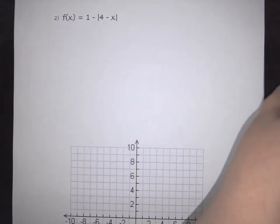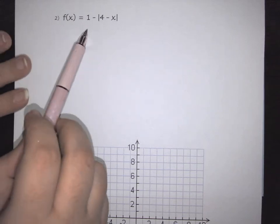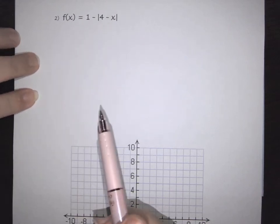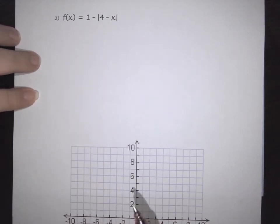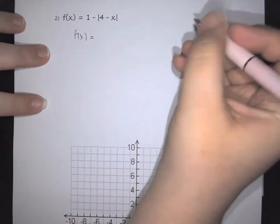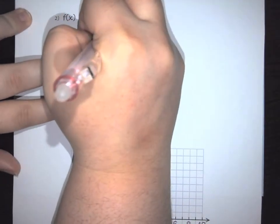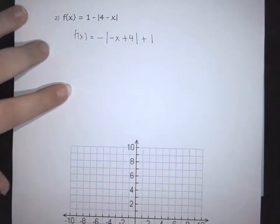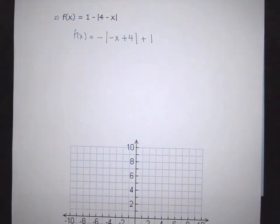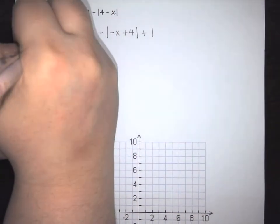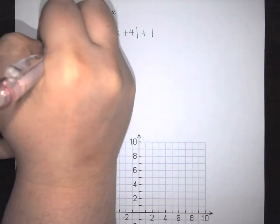Now let's look at another example. We've got the function one minus the absolute value of four minus x. The first thing I would do is rearrange the equation so I can see the translations more clearly. By rearranging your terms, you can much more easily pick out what's going on.